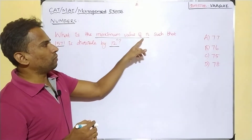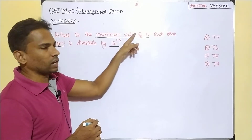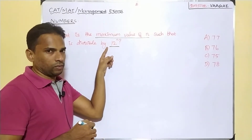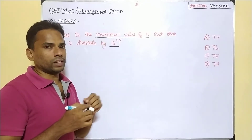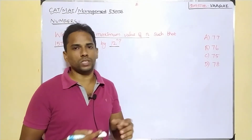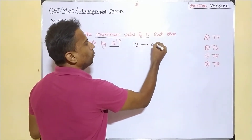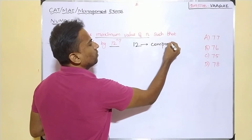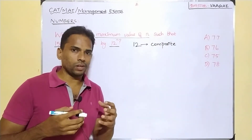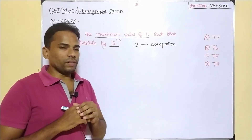Now look at our question. We have to find the highest power of 12, because n is the power of 12 — specifically 12 power n. What can we tell about this number 12? 12 is a composite number, not a prime number. So whenever we need to find the highest power of a composite number, we should be a little bit cautious with that.